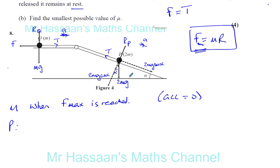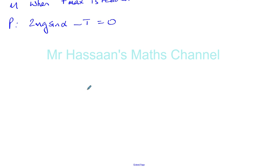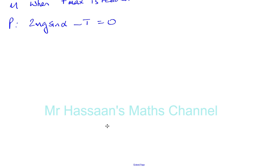So if we consider particle P and look at the forces acting upon particle P, we can see that 2mg times sine alpha minus T is equal to zero. There's no acceleration, ma is zero.